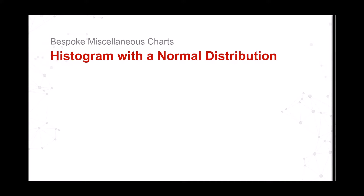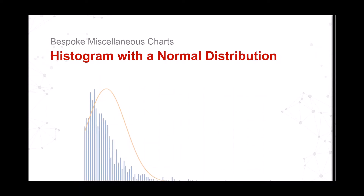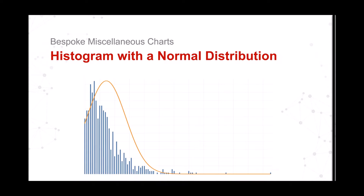Bespoke miscellaneous charts: a histogram with a normal distribution curve. This is what it looks like. The normal distribution takes into account your data and plots a distribution curve on top. By plotting a histogram with the normal curve, you can see how your data fits against said curve. It's very useful as a tool and as a visualization.